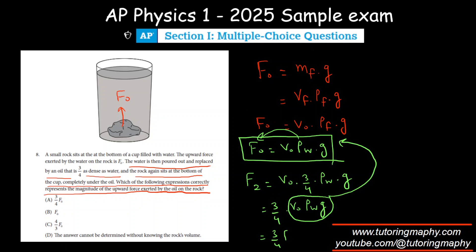So that's going to be three-fourths of F_naught. That is the new buoyant force that's going to act when it is in the oil, which is option A. That was a pretty straightforward question. I hope this one makes sense.